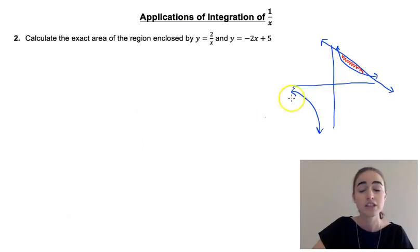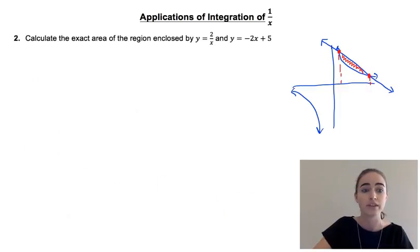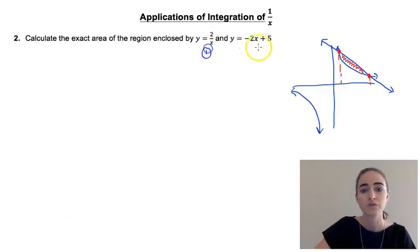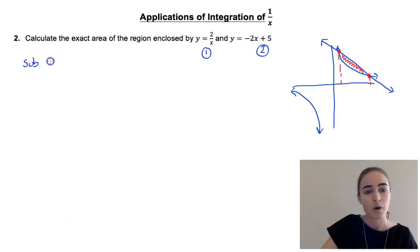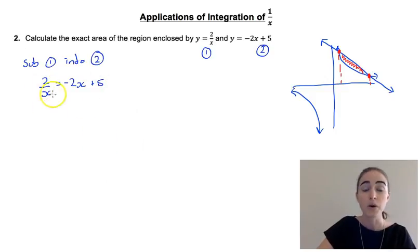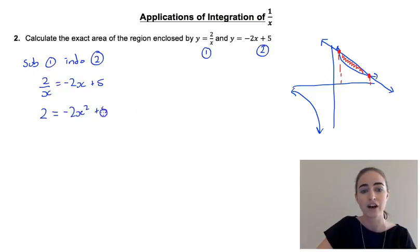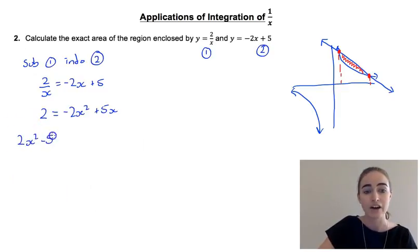We want to find the area of this region here. The first thing we need to do is find the points of intersection of those two curves — specifically the x-coordinates of both points. So we're going to solve these two equations simultaneously. Calling the first equation 1 and the second equation 2, we substitute equation 1 into equation 2 to get 2 over x equals minus 2x plus 5. Multiplying both sides by x gives 2 equals minus 2x squared plus 5x.